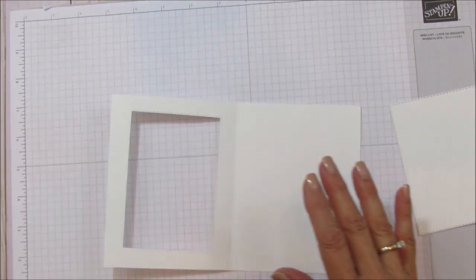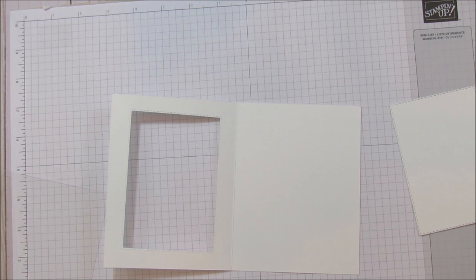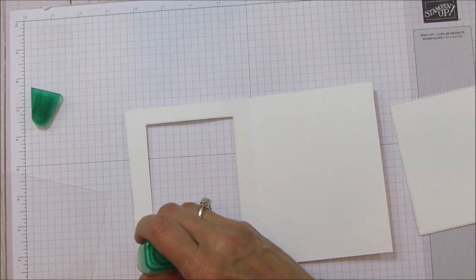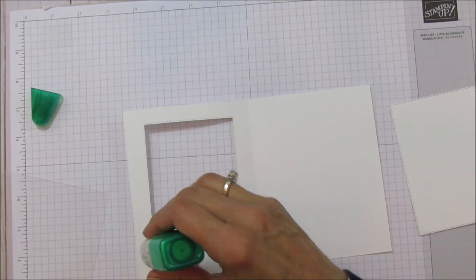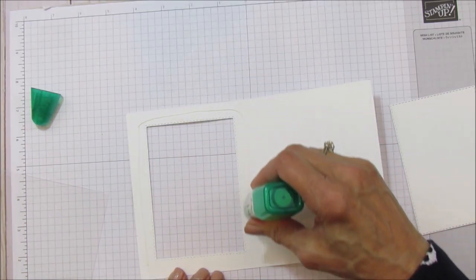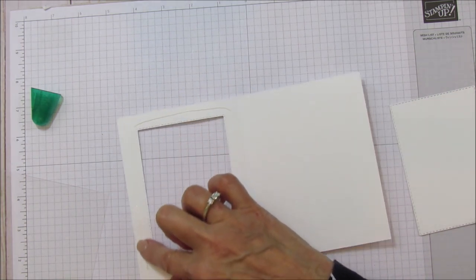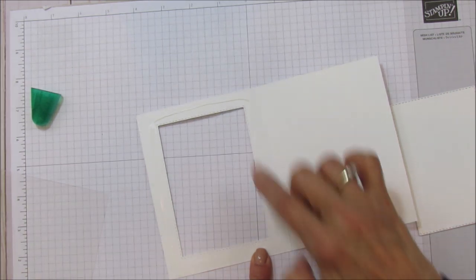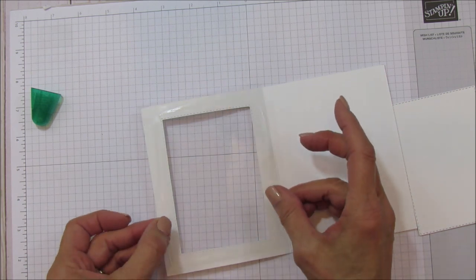Alright, so we are going to put on our window sheet now and the best way to do this is use wet glue because it will dry clear. I'm getting low on this so I'm hoping I have enough to do this card. We are going to put this around the edges and then I just run my finger to make it really really smooth.